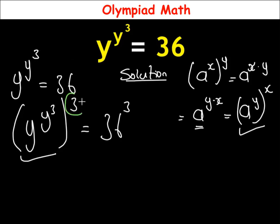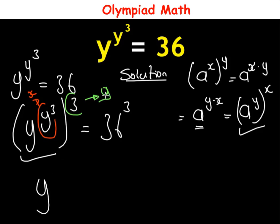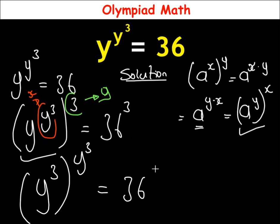Applying this identity here: power 3 we call y, and power y raised to power 3 we call x. Applying the rule — a raised to power x power of y becomes a raised to power y power of x — we flip them. So we get: y, then 3 comes inside in brackets, all raised to power y raised to power 3 outside, which equals 36 raised to power 3.